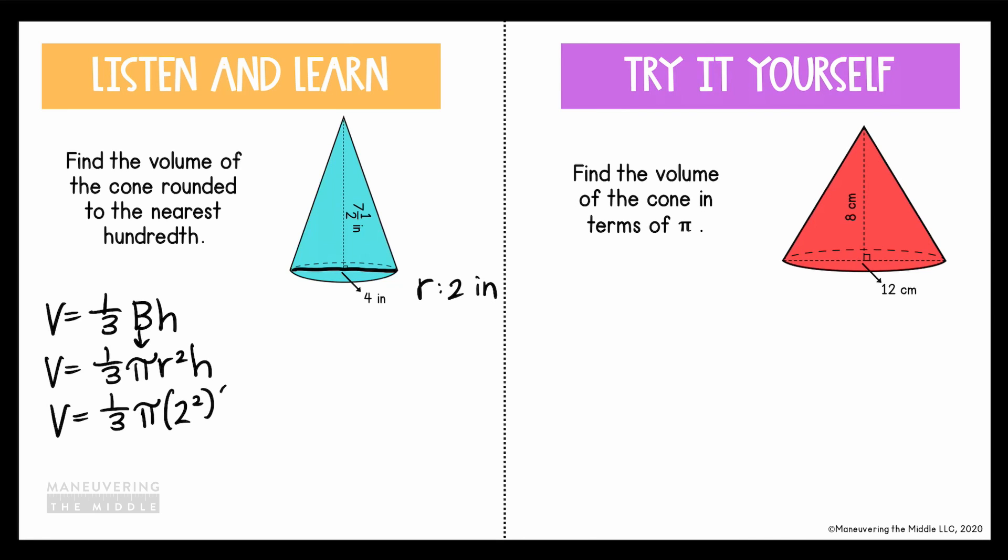So in our formula, we need the radius, and then the height, which is 7 and a half. Because 1/2 I know is 0.5, I'm going to rewrite this as a decimal just to make my calculations a little bit easier. Multiply through, and we find that the volume is 31.42, and that's inches cubed.